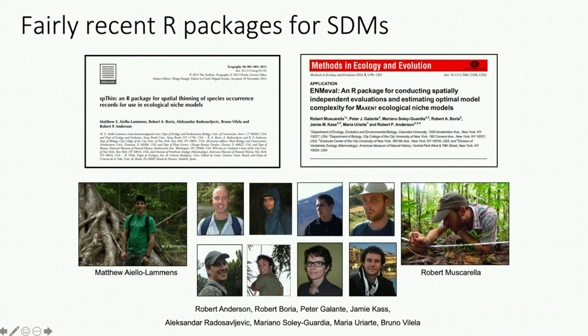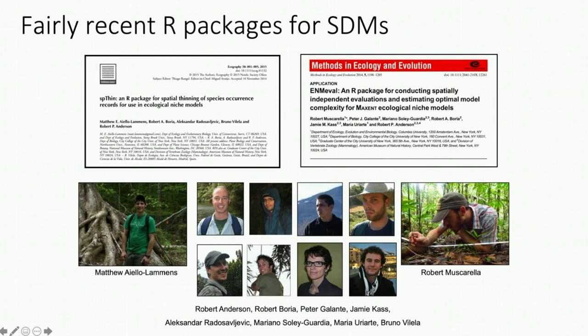Two of these R packages that are fairly recent are spthin and enmeval. spthin was an R package released by Rob's lab and collaborators, led by Matt Lammans, to spatially thin occurrence data to reduce spatial bias and spatial autocorrelation. enmeval was also released by Rob's lab and collaborators, led by Bob Muscarella — a package for tuning SDMs to find optimal settings to avoid overfitting and find good settings for penalizing model complexity. If you were not a programmer, you couldn't really access these tools, and we wanted to build something that would make them more accessible.